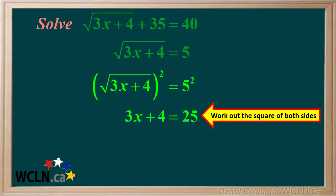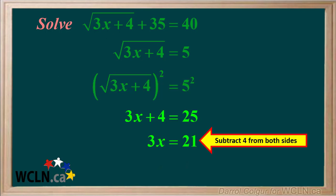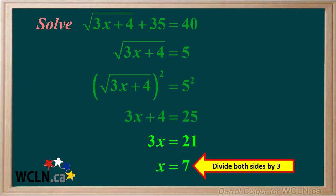The next step in isolating the variable is subtracting 4 from both sides. Subtracting 4 from both sides gives us 3x equals 21. Next we divide both sides by 3 to isolate x. 3x divided by 3 is x, and 21 divided by 3 is 7. So we get x equals 7. So the final answer is x equals 7.